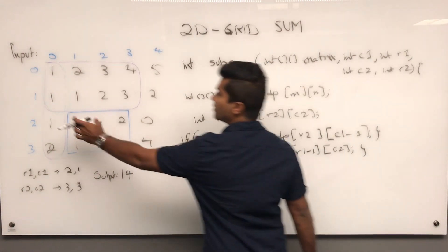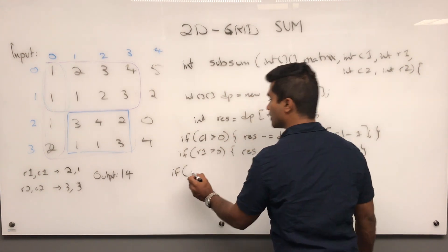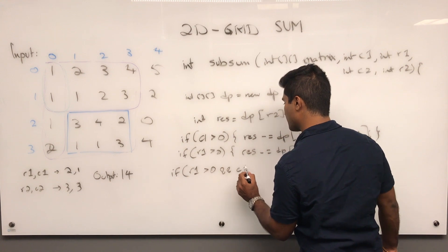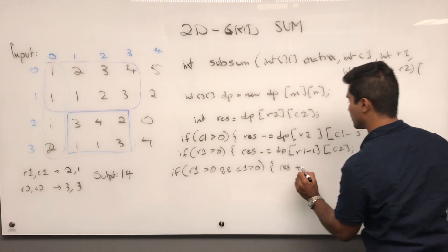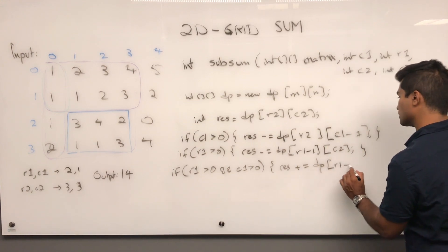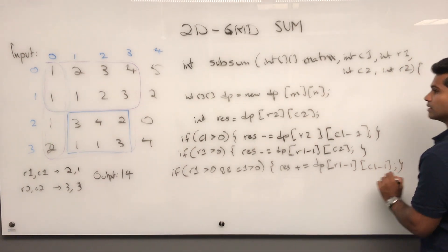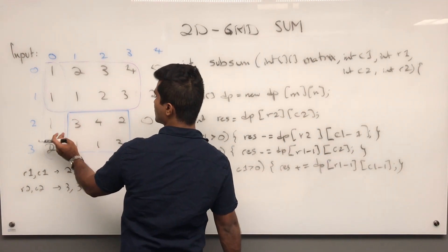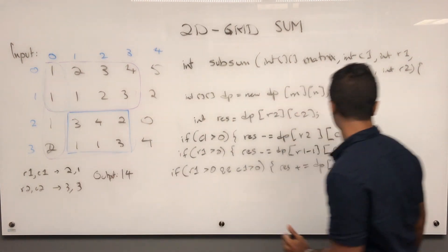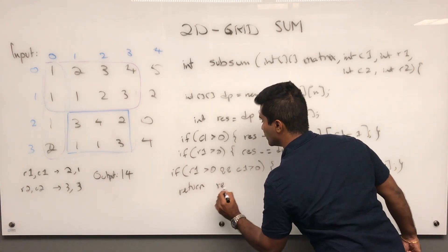Now we need to add this back. If there's some space on both the row and the column, then we increment res by DP of r minus 1 and c1 minus 1. Let's see if that works out. This is r minus 1, c1 minus 1. And then that's it. We return the result.